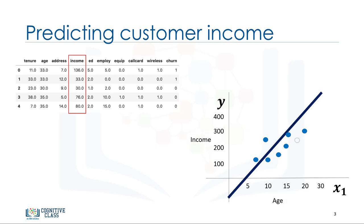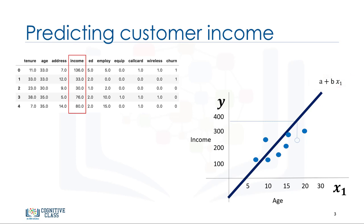We can plot it and show age as an independent variable and income as the target value we would like to predict. With linear regression, you can fit a line or polynomial through the data. We can find this line through training our model or calculating it mathematically based on the sample sets. This line has an equation shown as a plus b times x1. We use this line to predict the continuous value y — that is, the income of an unknown customer based on their age.